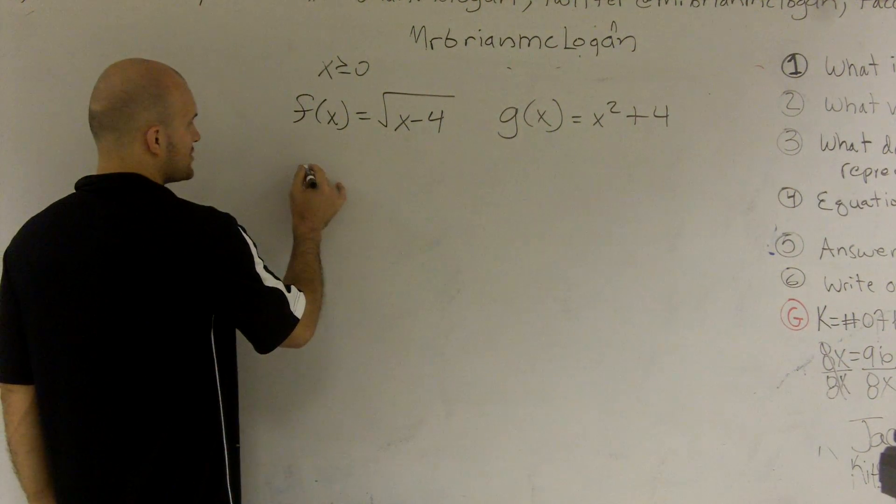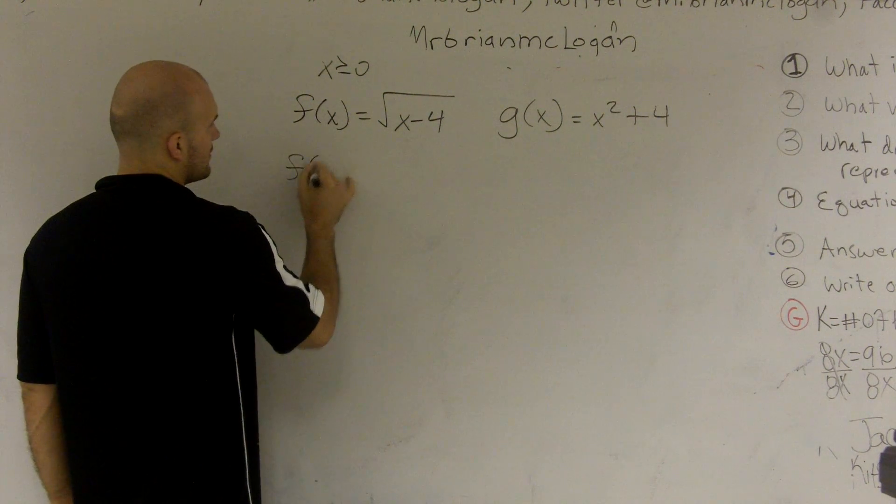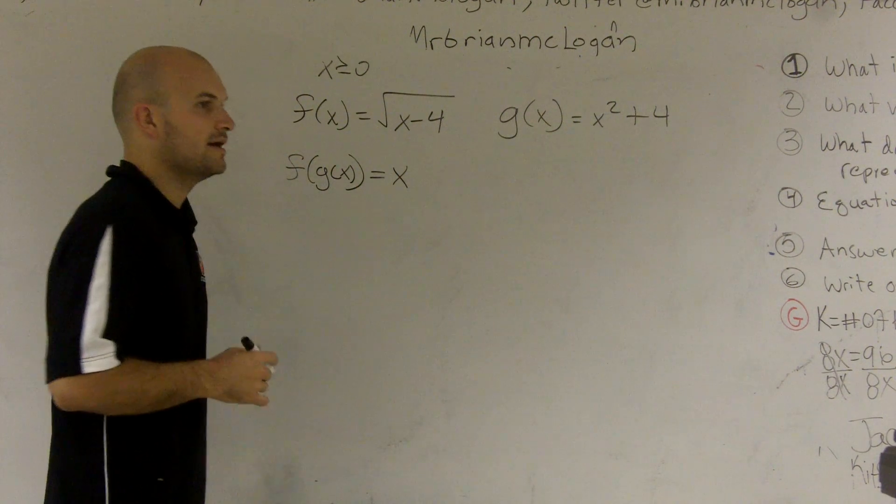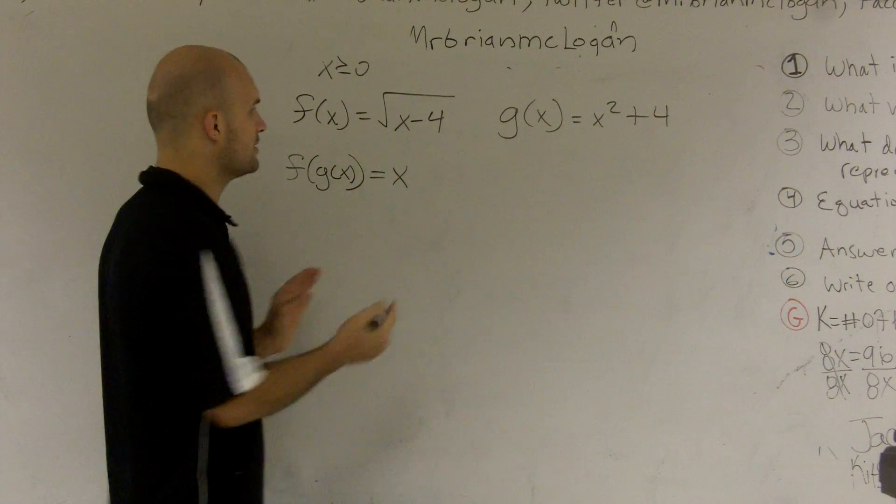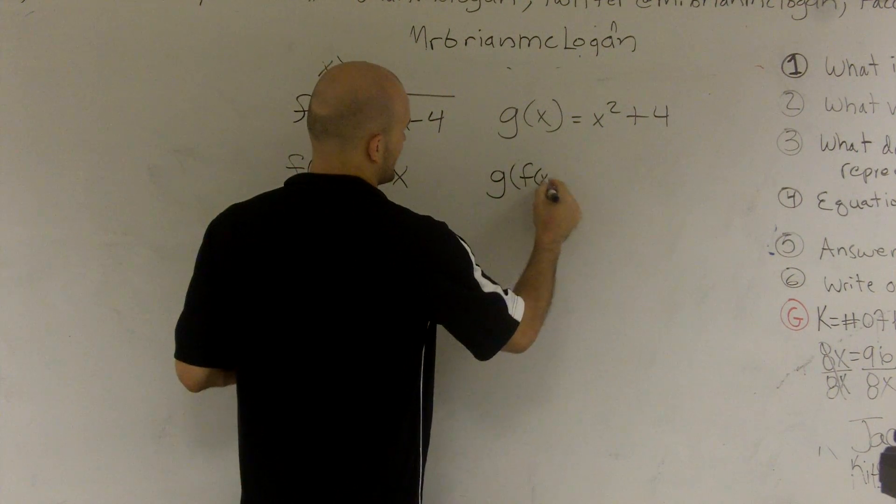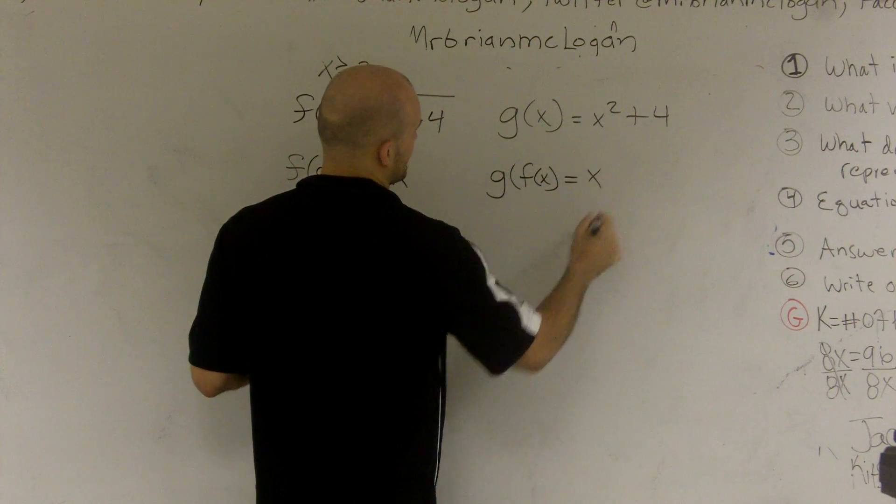So what I mean by composition, if I do f of g of x, I'm going to get out x. And it also has to work for the other way. If I do g of f of x, I'm also going to get out x.